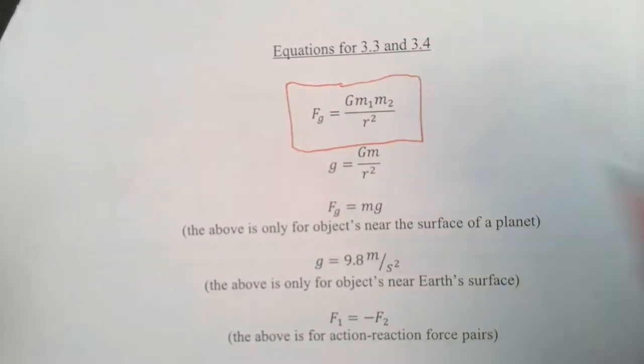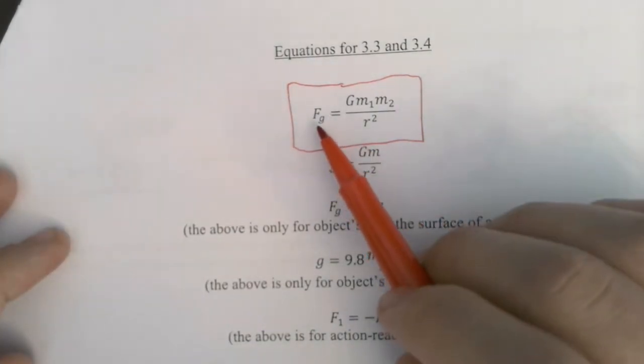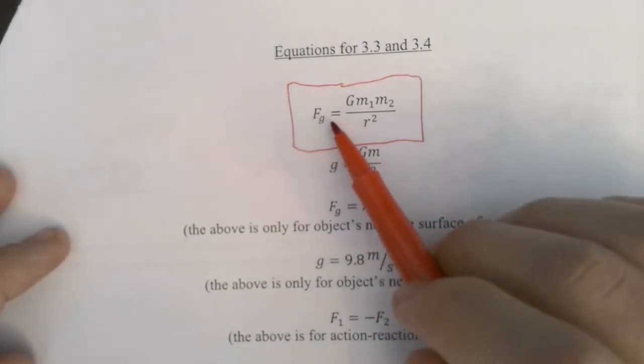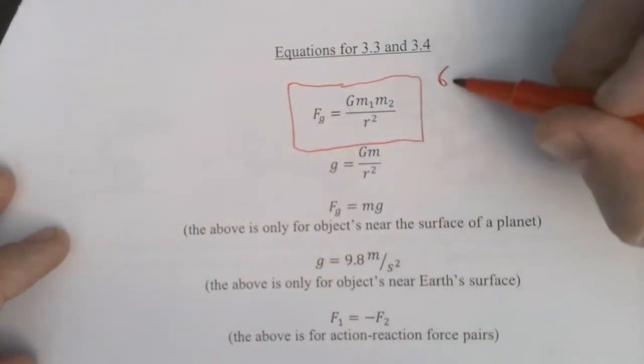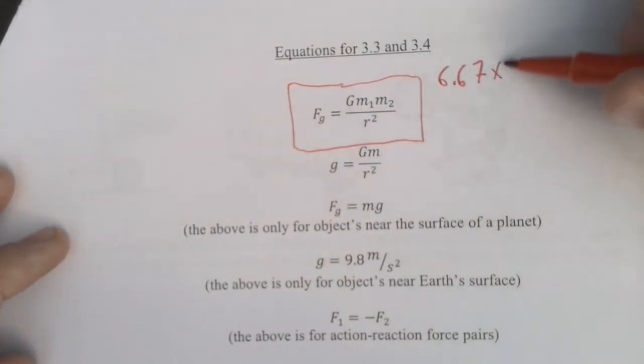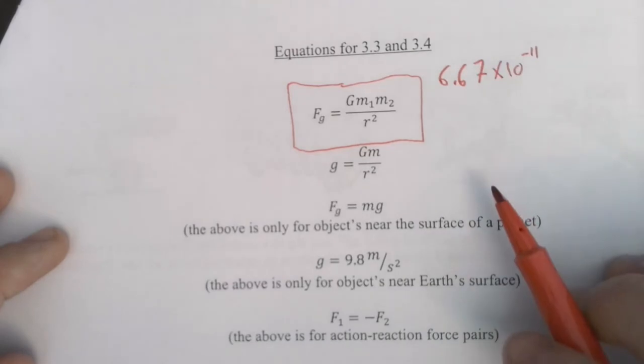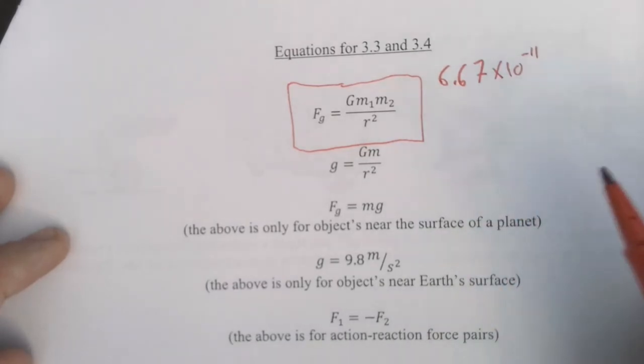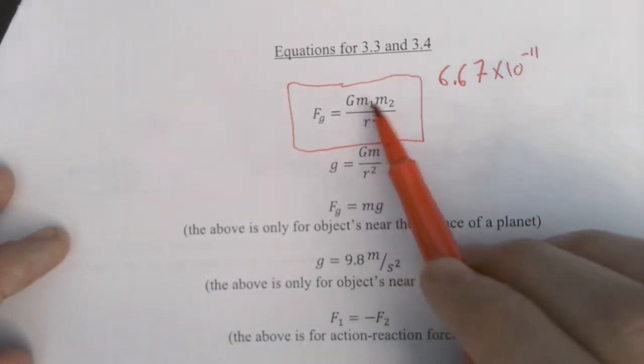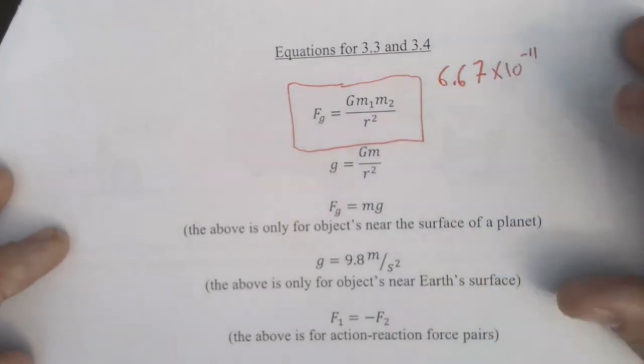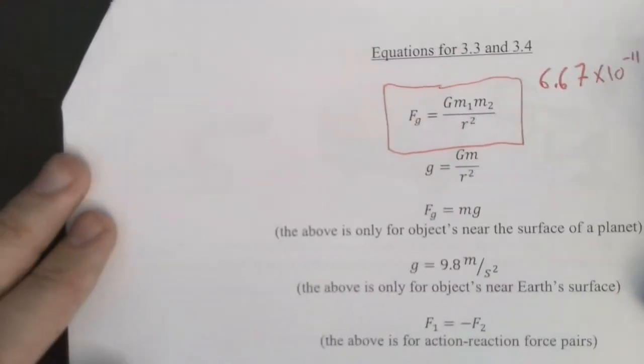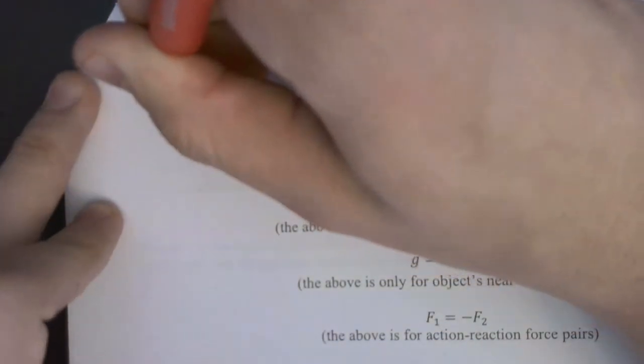This is the equation for gravitational force. Capital G is always 6.67 times 10 to the negative 11th. Gravity is always between two objects. So m1 and m2 are the masses of those two objects, and r squared is the center to center distance of those objects.